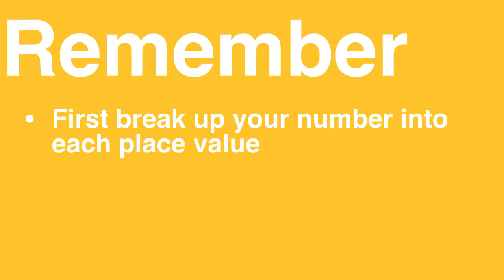From today remember the three steps of multiplying with an area model. First, break up your number into each place value. Then multiply each piece of the number on its own. Finally, you have to add all of the pieces together.